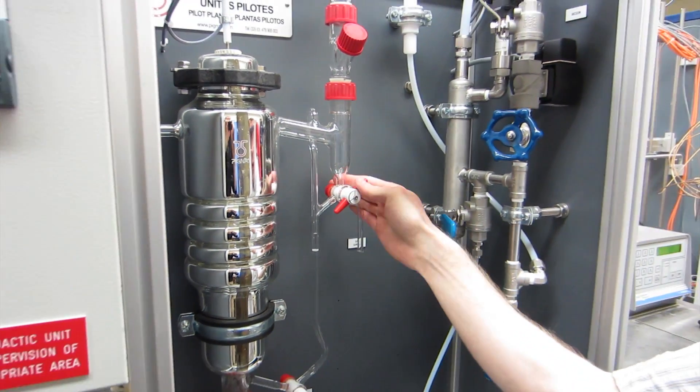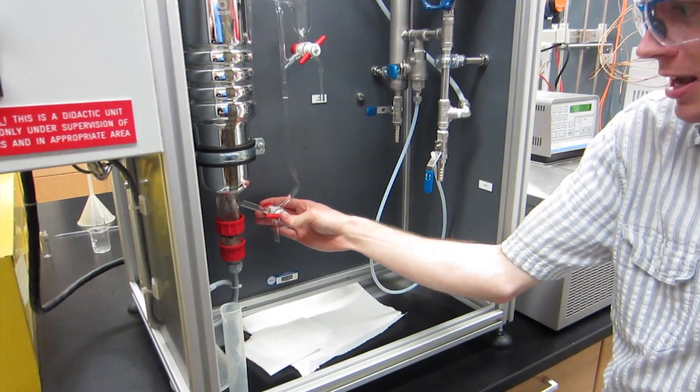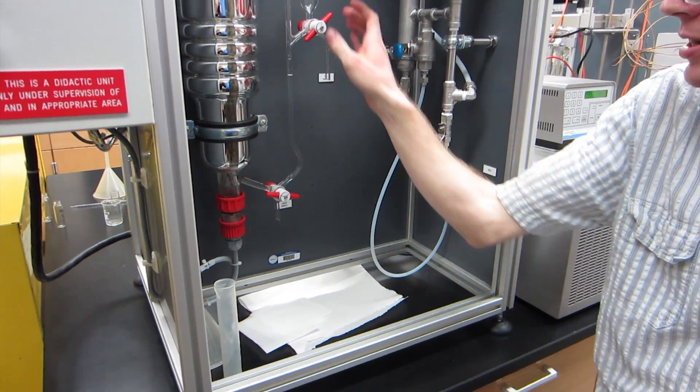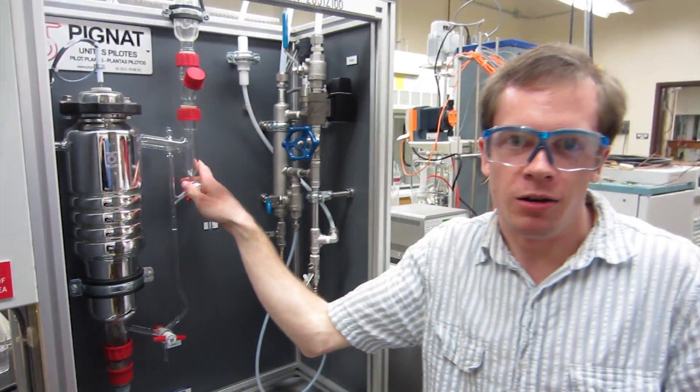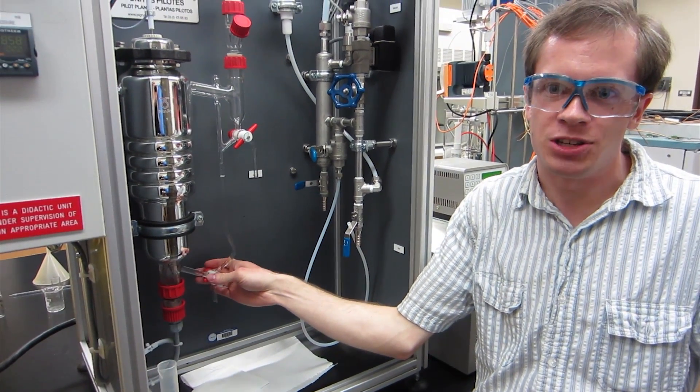And here we can take samples of the distillate and here we can take samples of the liquid. The distillate tells us what our vapor composition is and this can tell us what our liquid composition is.